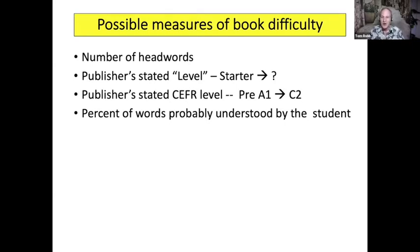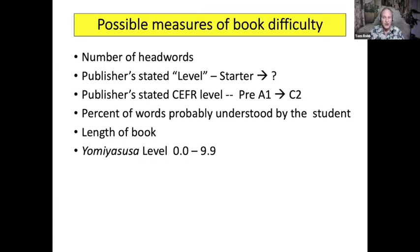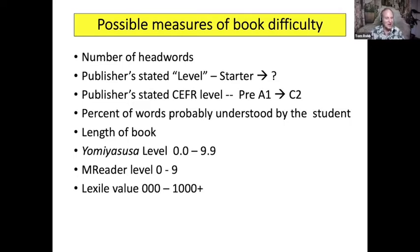The percent of words probably understood by the student — they're supposed to understand 98% of the words in the book for it to be readable without having to resort to a dictionary too frequently. The length of the book — a longer book tends to be more difficult. The Yomi Yasusa level, which is a scale that actually has 100 points and is the only one which is humanly judged, because teachers actually rated the books and it was the average of the ratings. My own M Reader scale goes from 0 to 9 — it used to go from 1 to 10, but we realized 1 was not low enough. The Lexile values, which are not used for extensive reading because they don't work very well, and graded readers don't have Lexile values anyway.